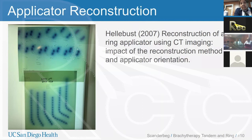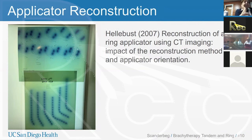Direct reconstruction uses the digitization tools to directly digitize the applicator as seen on the image set. With an applicator library, the planner can use overlay tools to place a known applicator on top of the applicator seen on the image set. An advantage of the applicator library is that it typically is more accurate with a better representation of the source path.